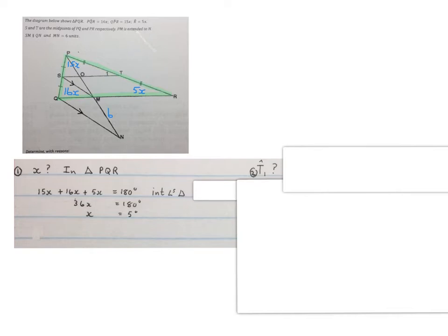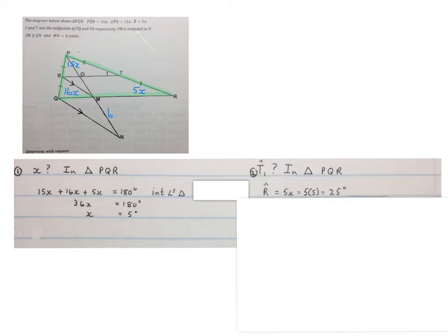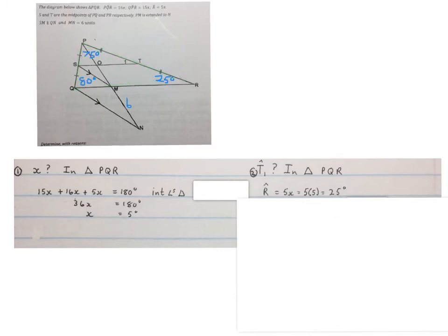The next thing they ask us to work out is the size of angle T1, that angle over there. Again we start with triangle PQR, the green triangle. They told us that R is 5x, and that means it's 5 times 5 from the X that we worked out here, and that gives me 25 degrees, which we now can indicate on the picture. So that angle there is 25 degrees.